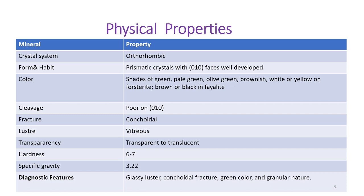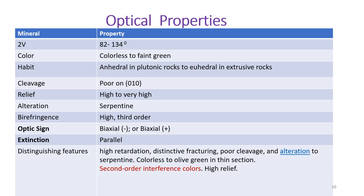All olivine group minerals belong to the orthorhombic crystal system and occur as well-developed prismatic crystals. Colors range from green and pale green to olive green, sometimes brownish, white, or yellow — brown or black in the case of fayalite (iron olivine, Fe₂SiO₄). Cleavage is poor on {010}, fracture is conchoidal, luster is vitreous, and diaphaneity ranges from transparent to translucent. Hardness is 6–7 and specific gravity is about 3.2. Important diagnostic features include glassy luster, conchoidal fracture, green color, and granular nature.